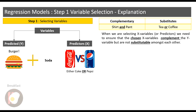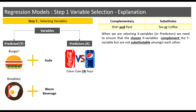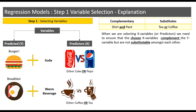Let us take another example. Here I have breakfast. What complements a good breakfast? Well, a warm beverage complements a good breakfast. In warm beverages I again have tea or coffee. There are people who have tea for breakfast or coffee for breakfast.